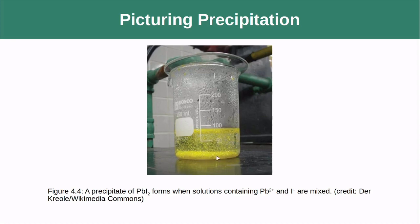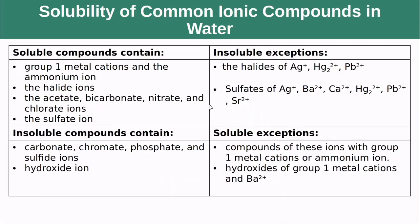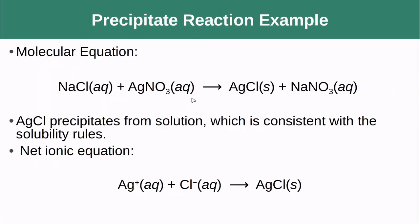Here's another example: sodium chloride reacting with silver nitrate. Going back to our rules, silver is one of our exceptions — silver nitrate is the only soluble form of silver. So when we switch the ions to form sodium nitrate and silver chloride, the silver chloride is the solid that forms. Sodium nitrate is group one with a nitrate, so it stays soluble. For the net ionic reaction, we just look at the ions forming that precipitate.